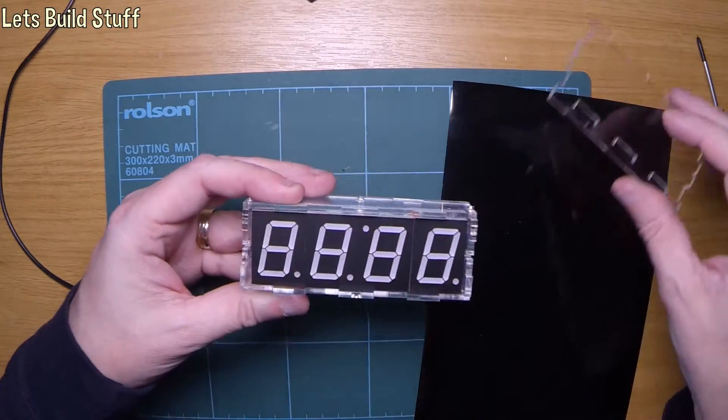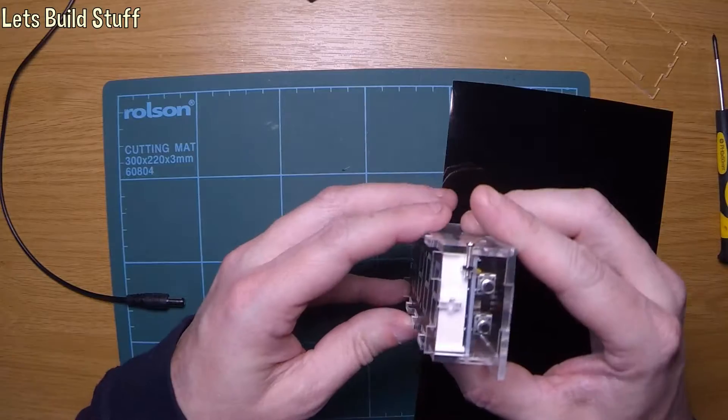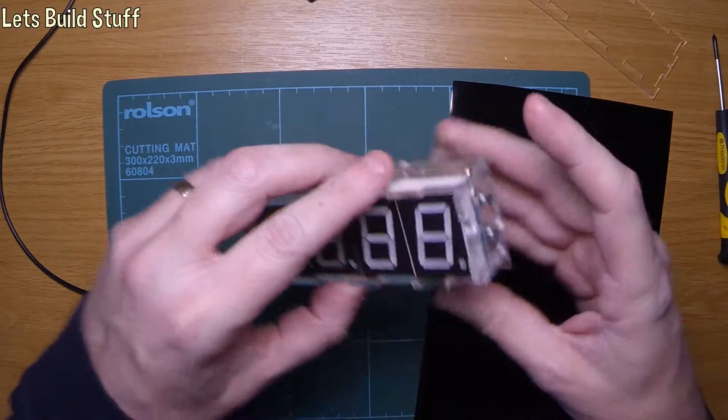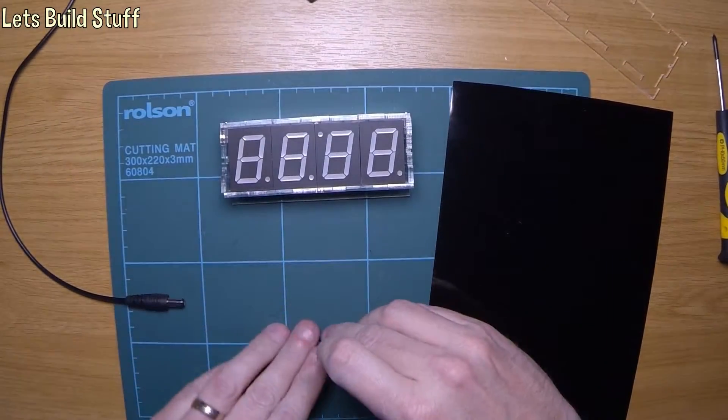I thought the best way to do this would probably be to cut it the same size as the actual display, but I won't be able to get that out of there easily, so just move these screws out of the way.